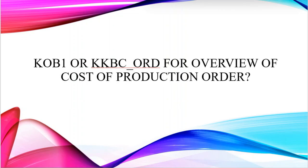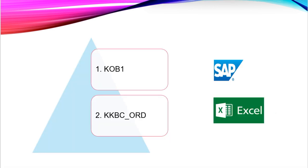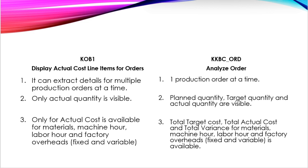Hello everyone. Today, in this video, you are going to learn the differences between KOB1 and KKBC-ORD, and you will realize which transaction code should be used for an overview of cost of production orders. KOB1 and KKBC-ORD are both SAP standard transaction codes, and the reports extracted from these T-codes can be exported into a spreadsheet. KOB1 is Display Actual Cost Line Items for Orders; KKBC-ORD is Analyzed Order.